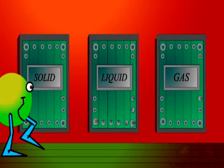Bob the Molecule decides to visit his friends, his fellow molecules in the three states — the solid, liquid, and gaseous state. Let's see what he observed.